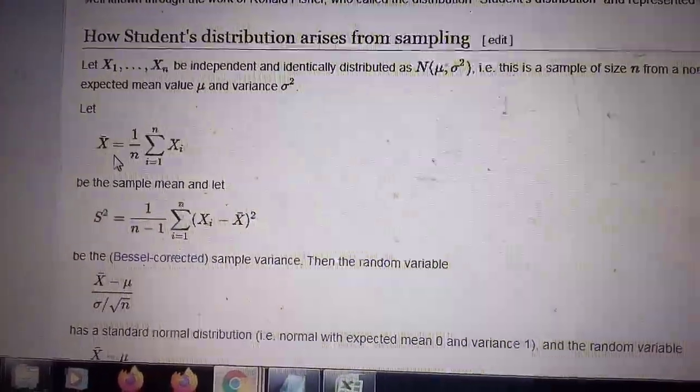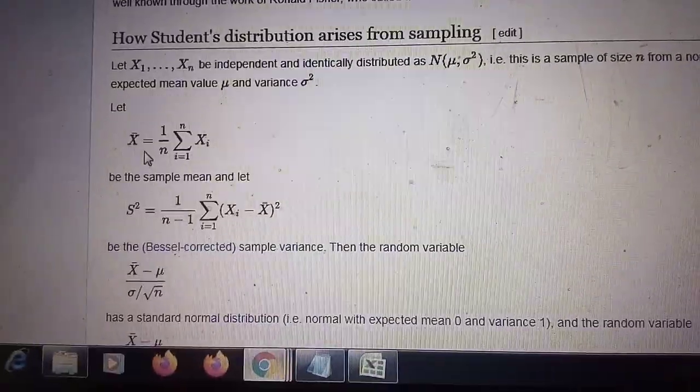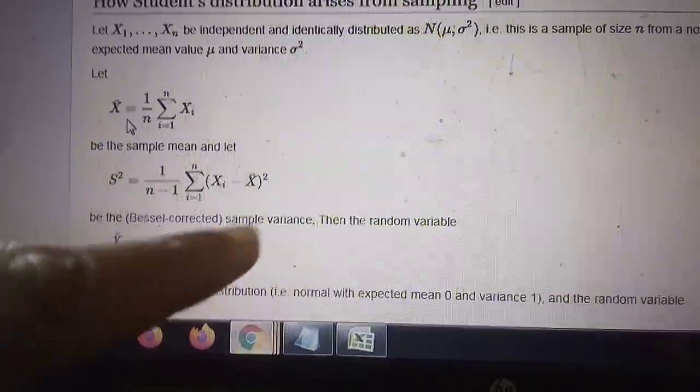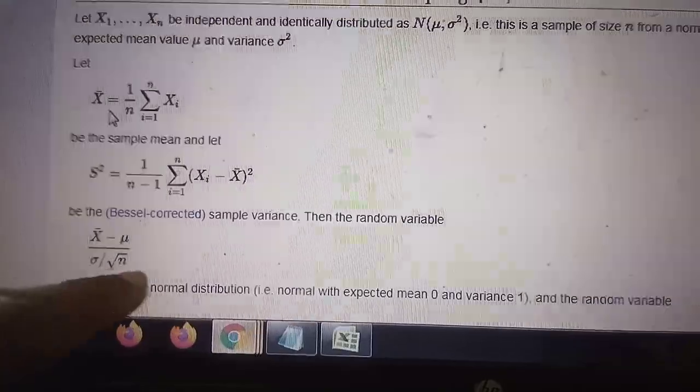It is also called Bessel-corrected sample variance. Now let us look at this quantity: x̄ minus μ in the numerator and σ divided by root n in the denominator.